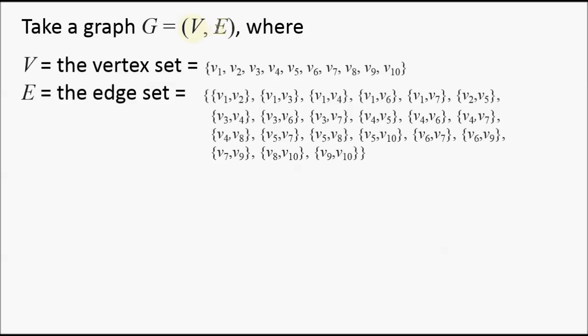And an edge set E. So the vertex set is just a list of names for the vertices in your graph. Here I've called these V1 to V10. And then the edge set is a set of vertex pairs, which denotes edges between pairs of vertices.